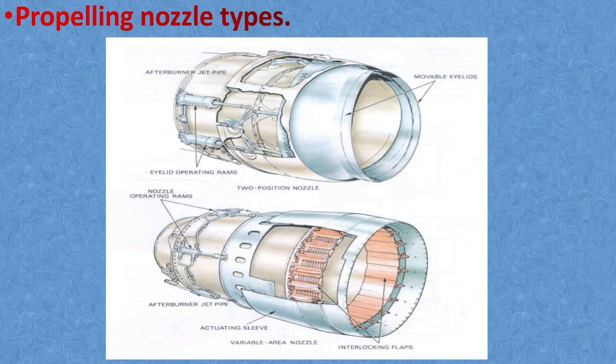In the next picture, you can see a variable area propelling nozzle which have a ring of interlocking flaps that are hinged to the outer casing and may be enclosed by an outer shroud. The flaps are actuated by powered ramps to the closed position and by the gas load to the intermediate or the open position.